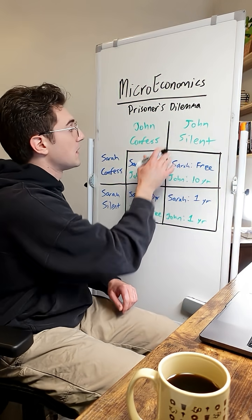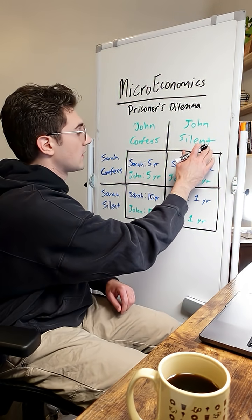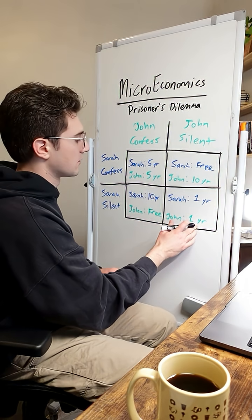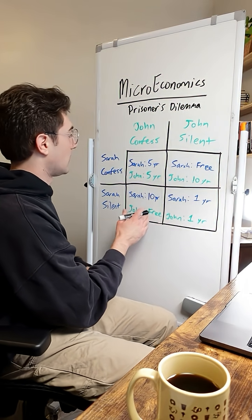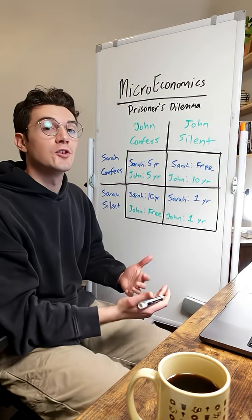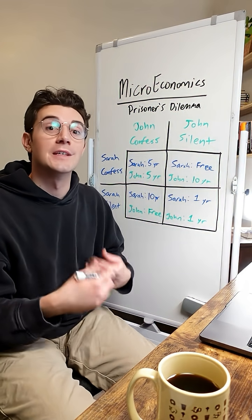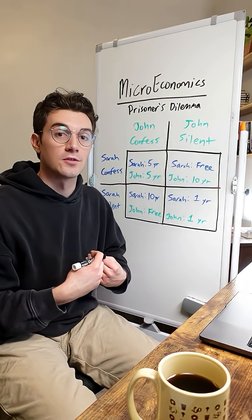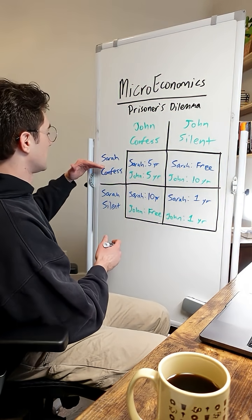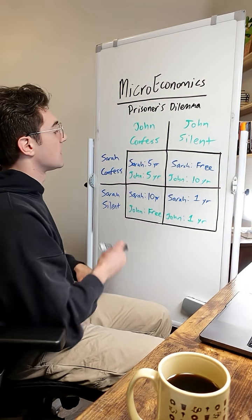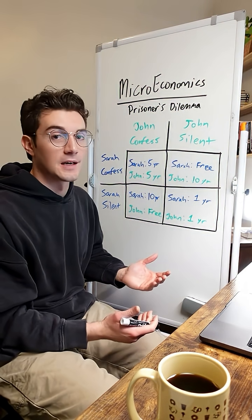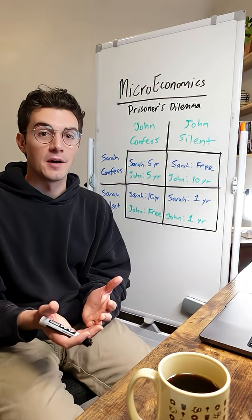Now let's zone in on John — only pay attention to the green values here. John is staying silent and achieving only one year of jail time. But if John were to confess, he'd go free. So he too is enticed to switch his strategy in his own self-interest. What happens when both of them confess? Sarah confesses, John confesses — they land in this top left cell and actually end up getting more jail time. That is the prisoner's dilemma.